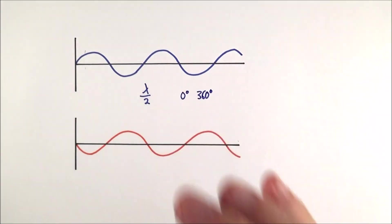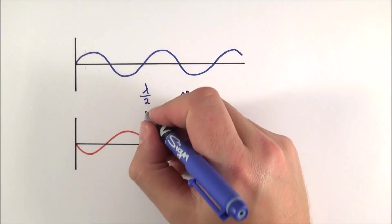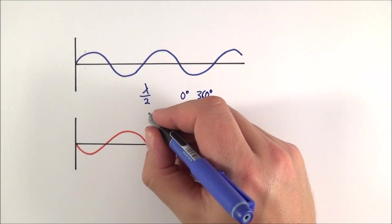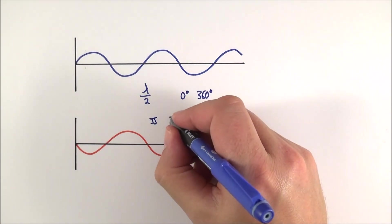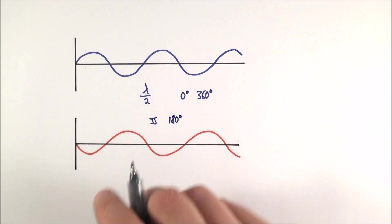As it is though, they're out of phase by half a wavelength, and that means they're going to be equal to π radians out of phase, or indeed 180 degrees out of phase, which is therefore in anti-phase.